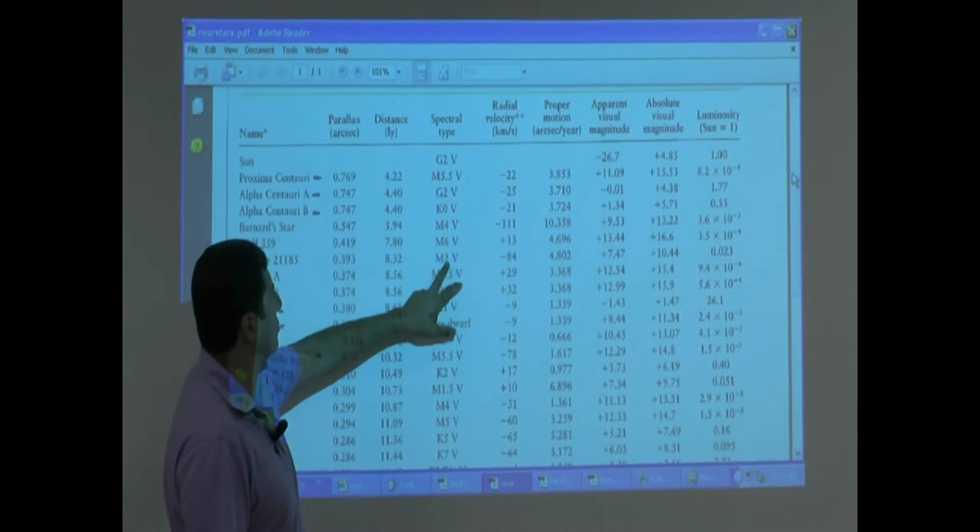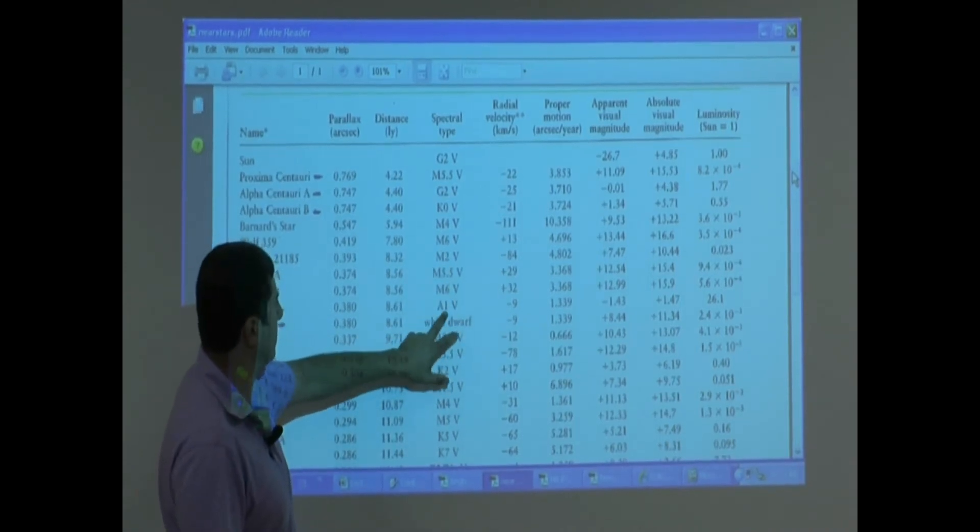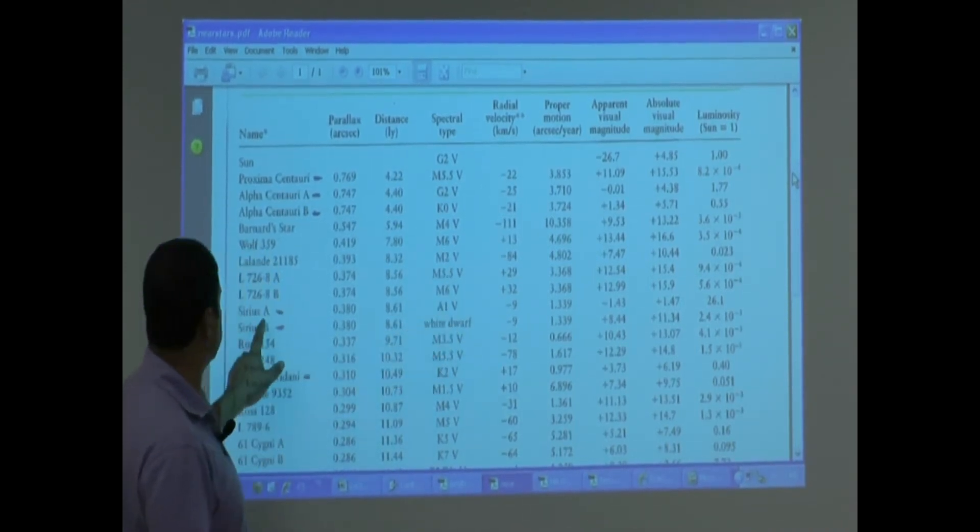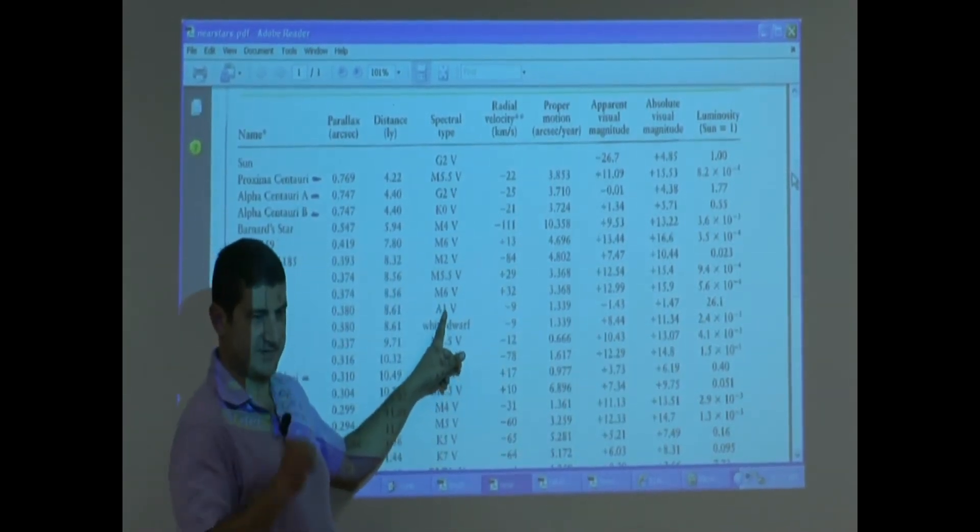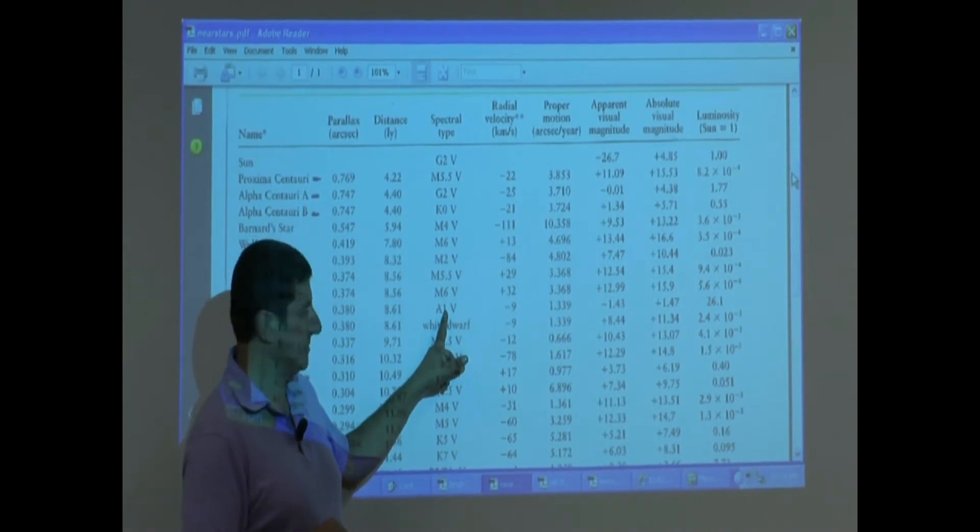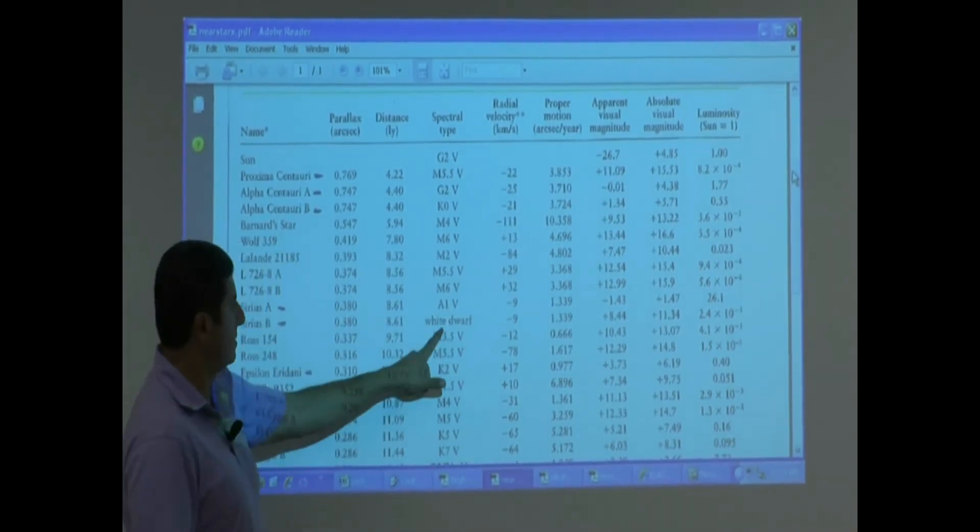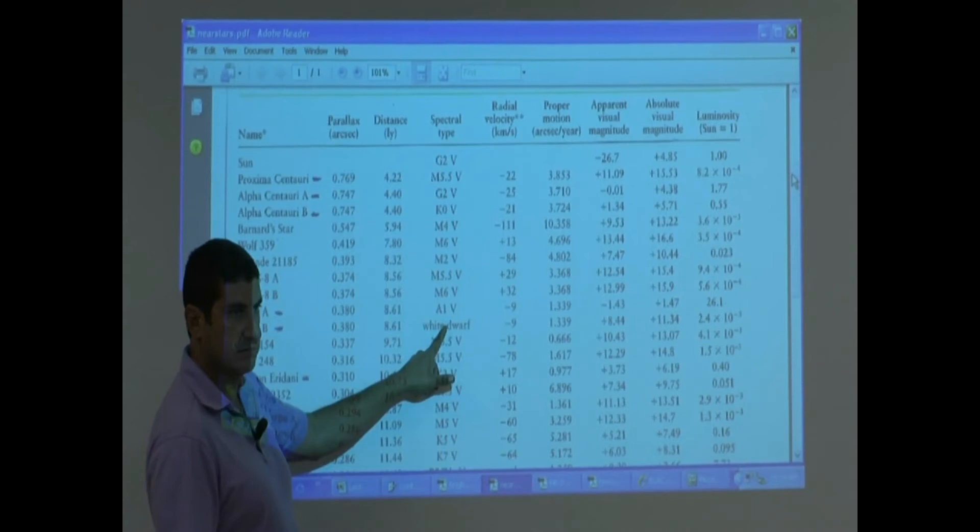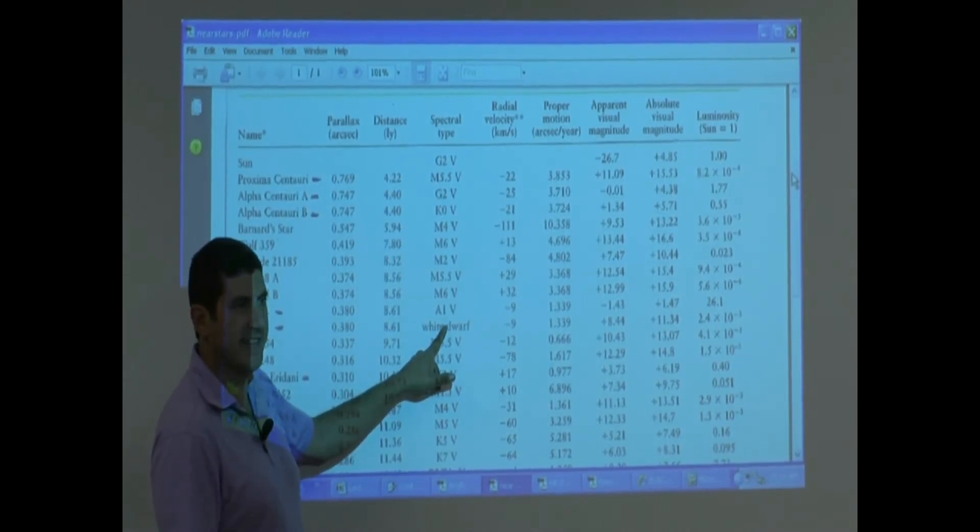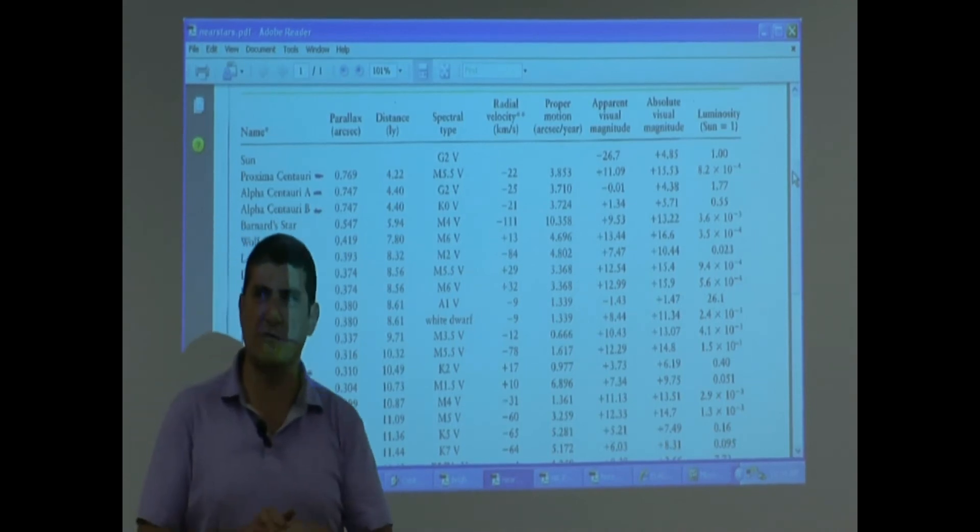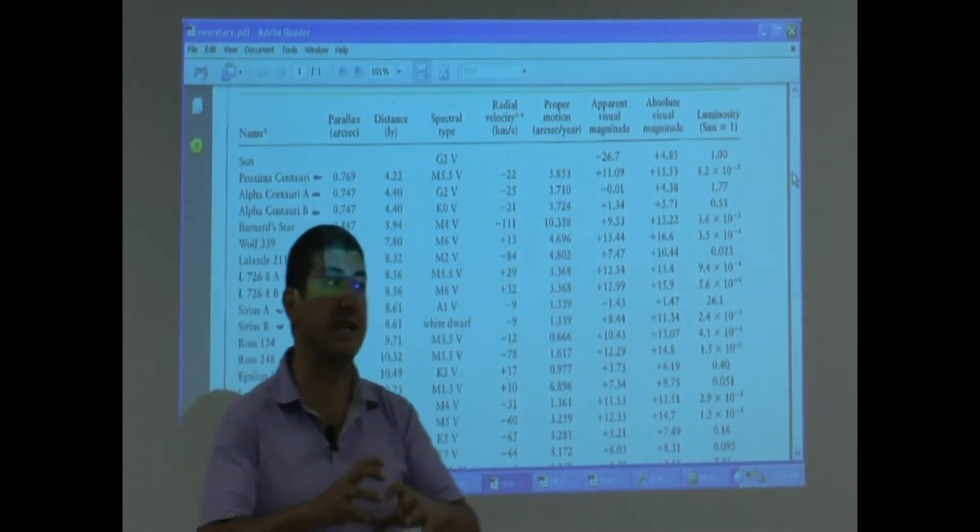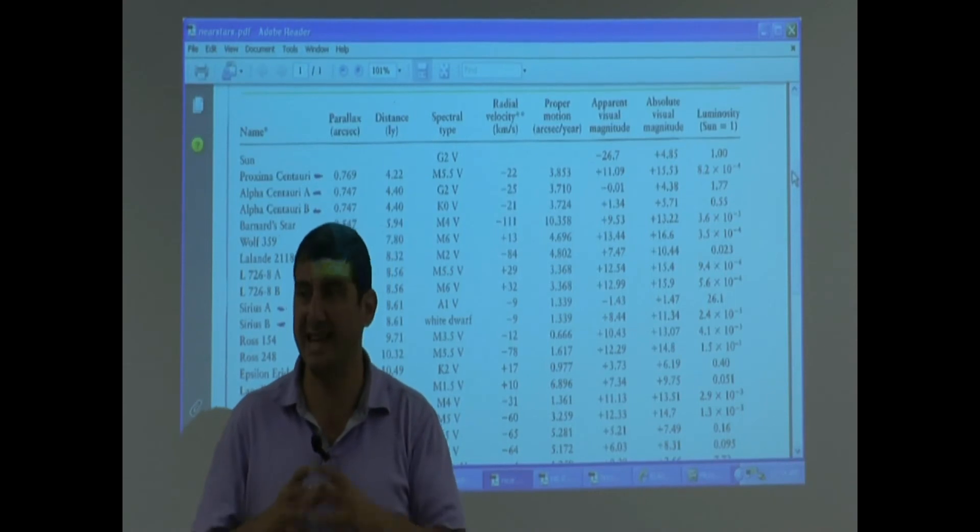K0, colder, right? M4, colder, colder, colder, colder, colder, colder. This is hotter. Oh, that makes sense. Sirius A is 26 times brighter and it's hotter than the sun, you see? Sirius B, colder or hotter? It doesn't give you, no spectral type. Why? It's a dead star. White dwarf is a dead star.